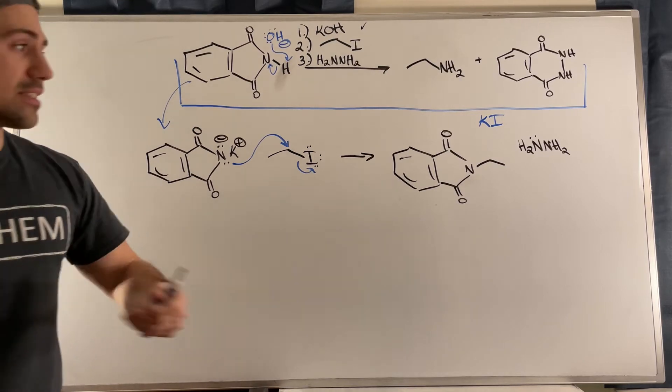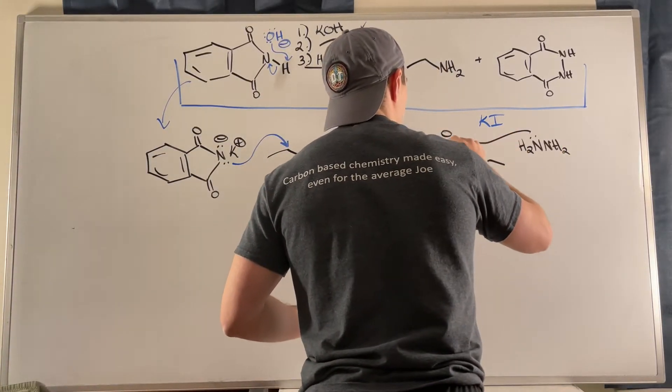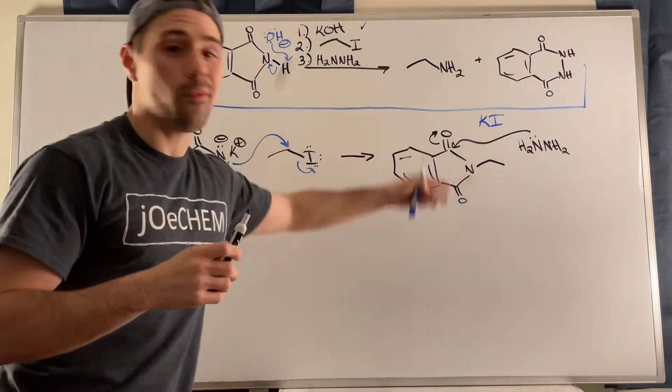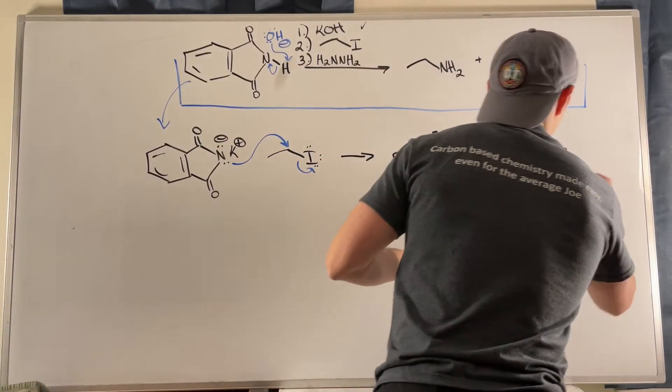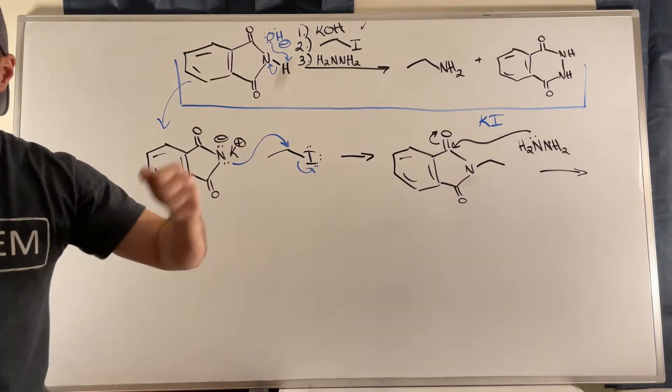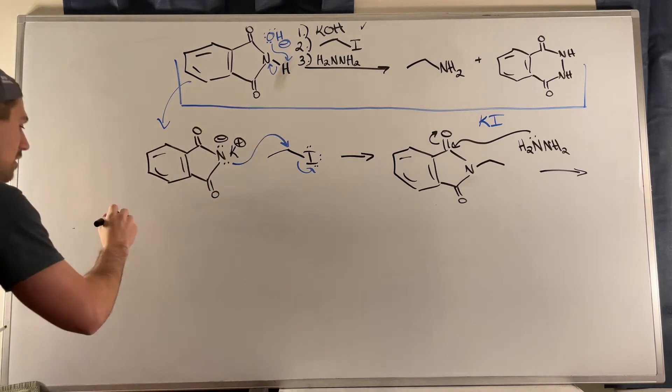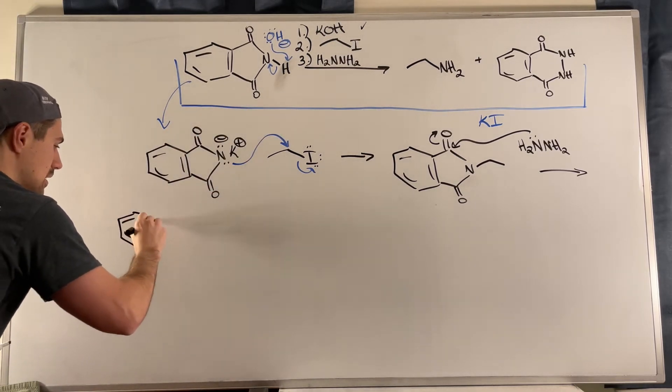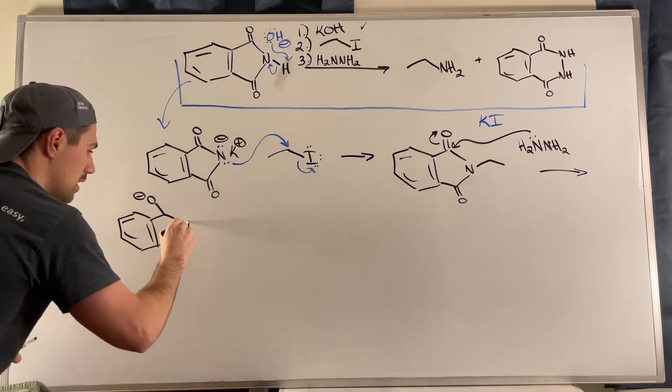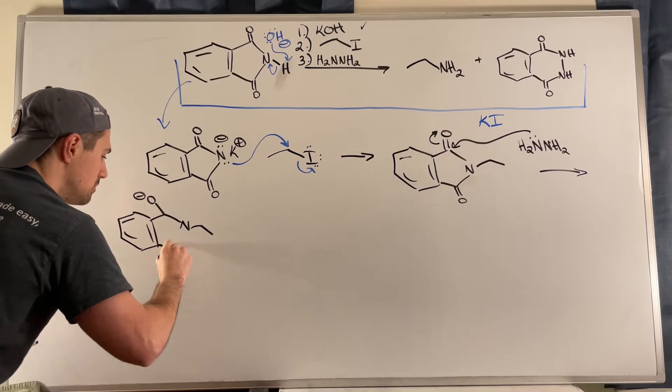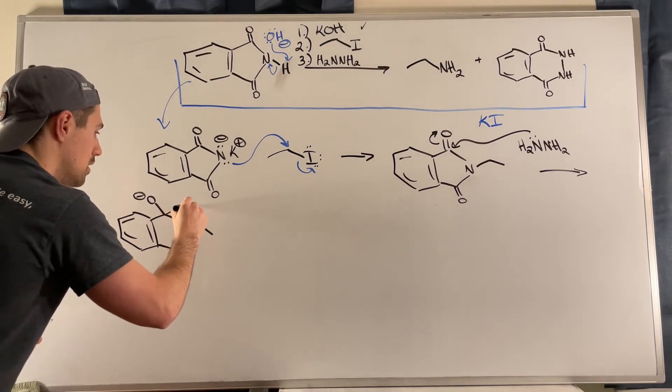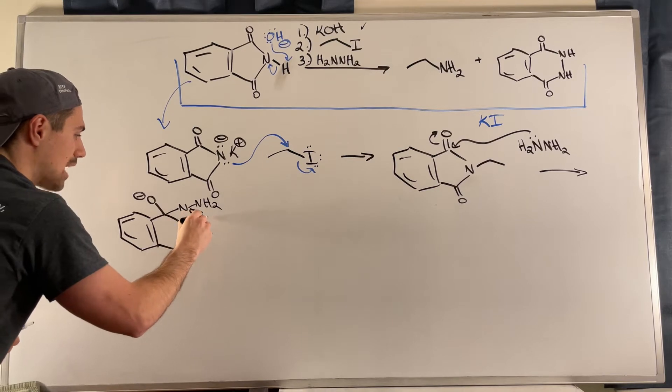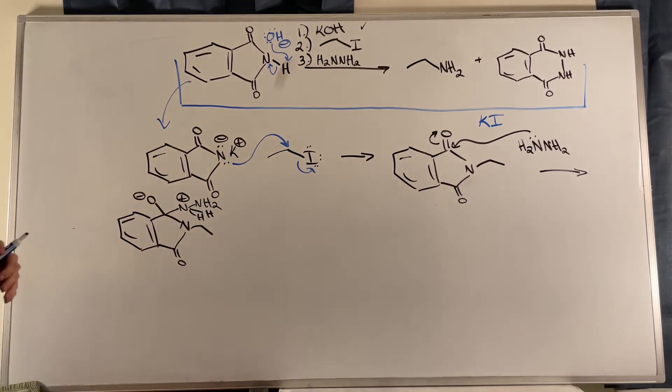So what we can do is we can attack this carbonyl carbon and kick electrons up. Now, you don't have to start with the top one. I'm going to start with the top one. But if you start with the bottom one, that works just as well. So we go ahead. And what I'm going to say is you usually don't have to show this step, but I want to show you it. It's good practice in my opinion. So once we attack there, what we have is O minus, then we have our ring left intact down here. But then what we're also going to have is now the hydrazine attached when things are going to get a little crowded, so I apologize for that.